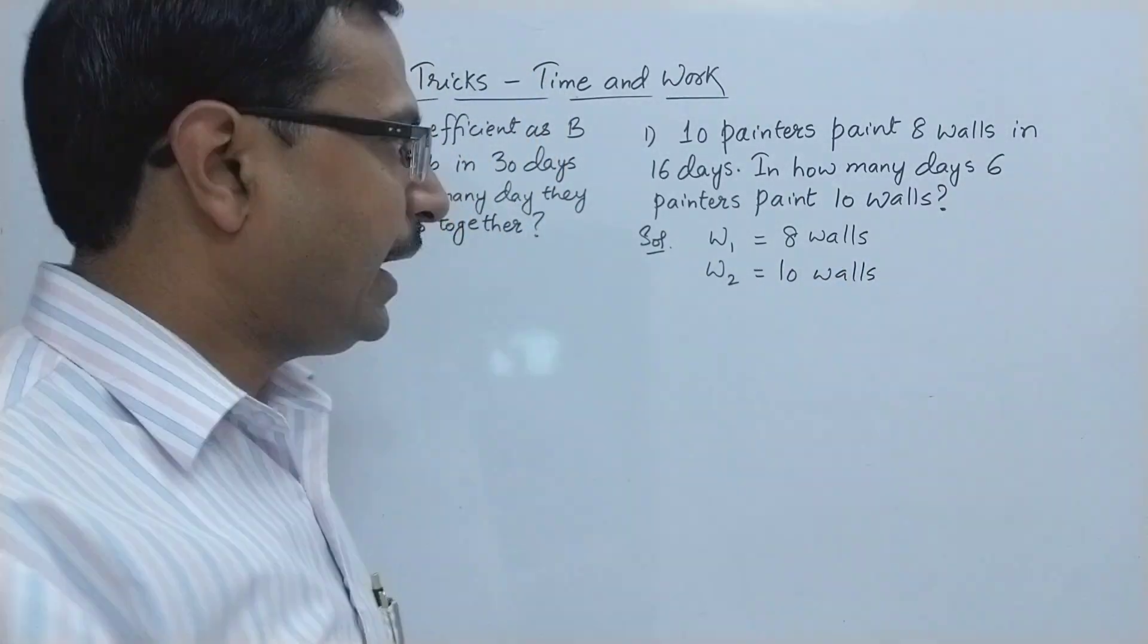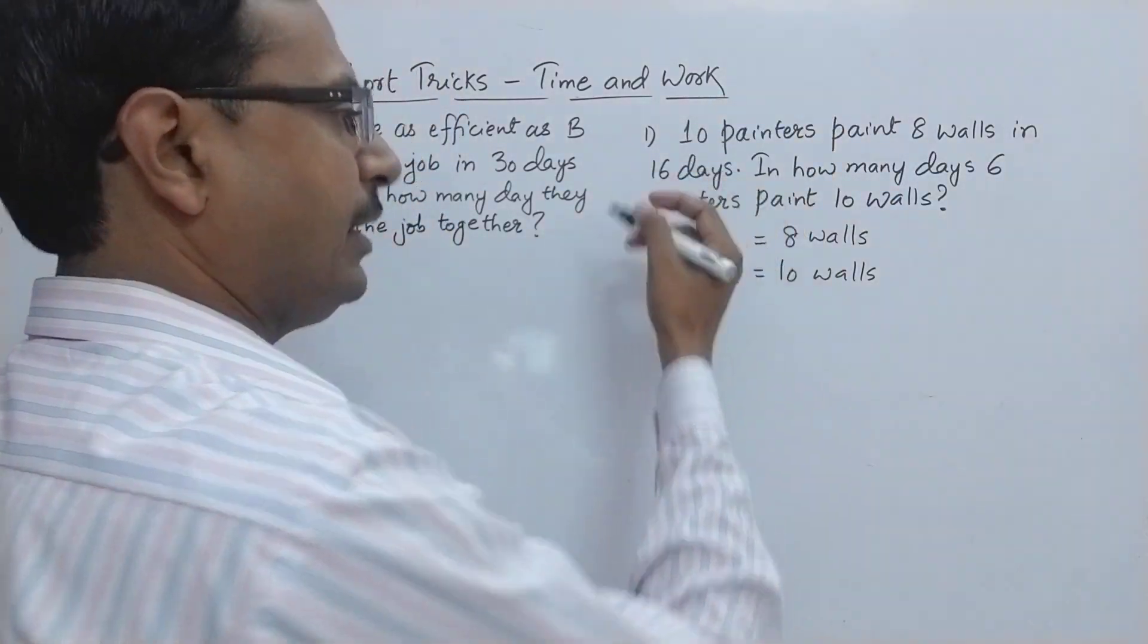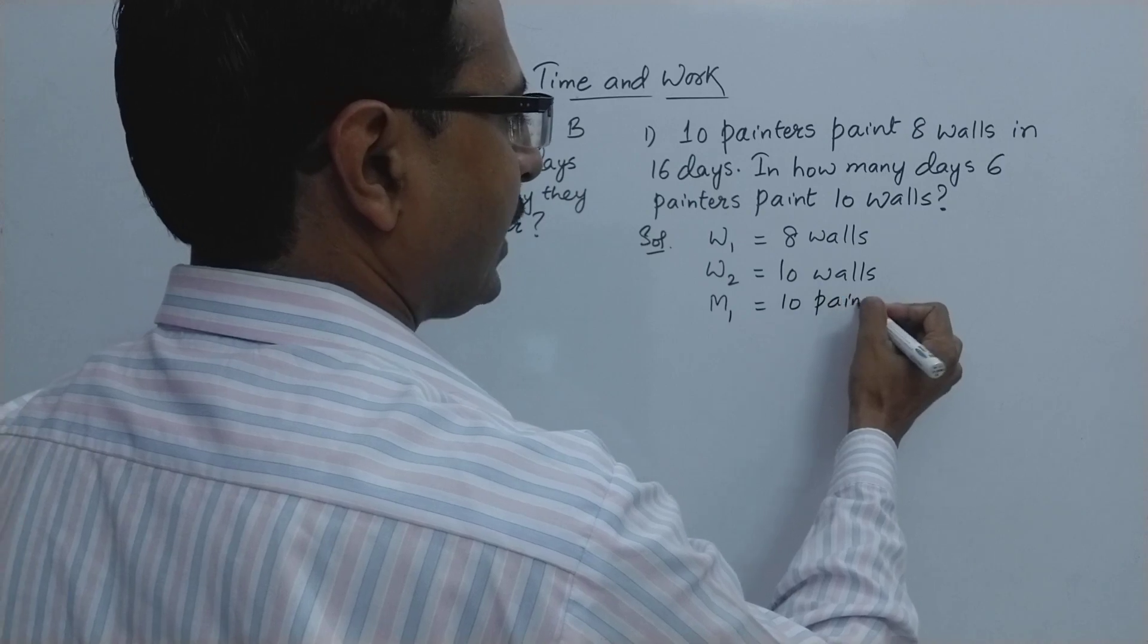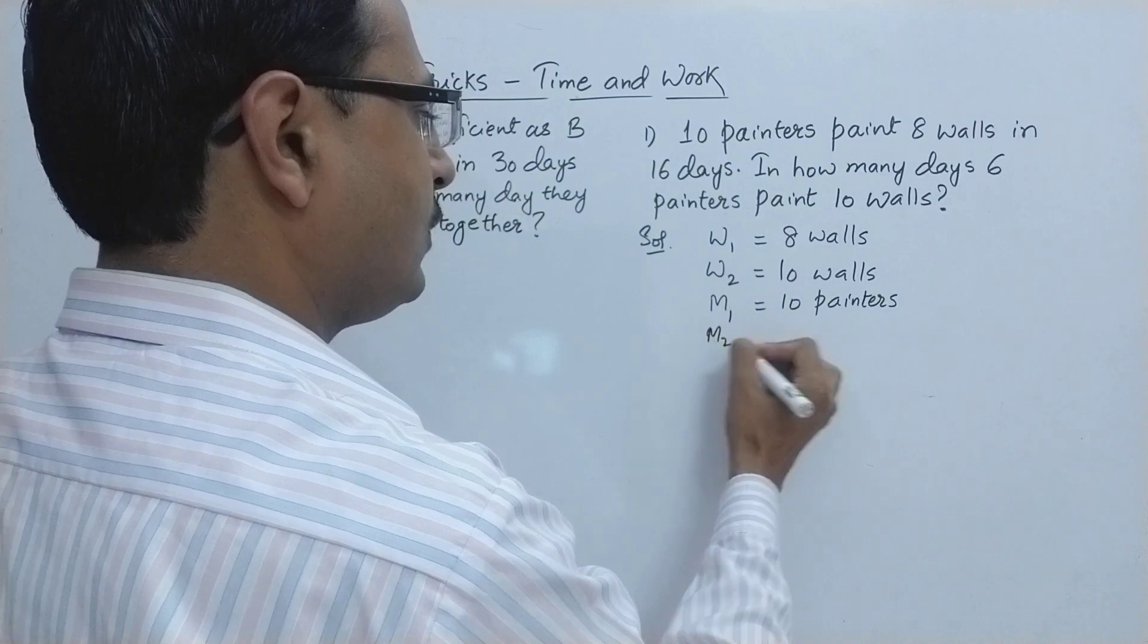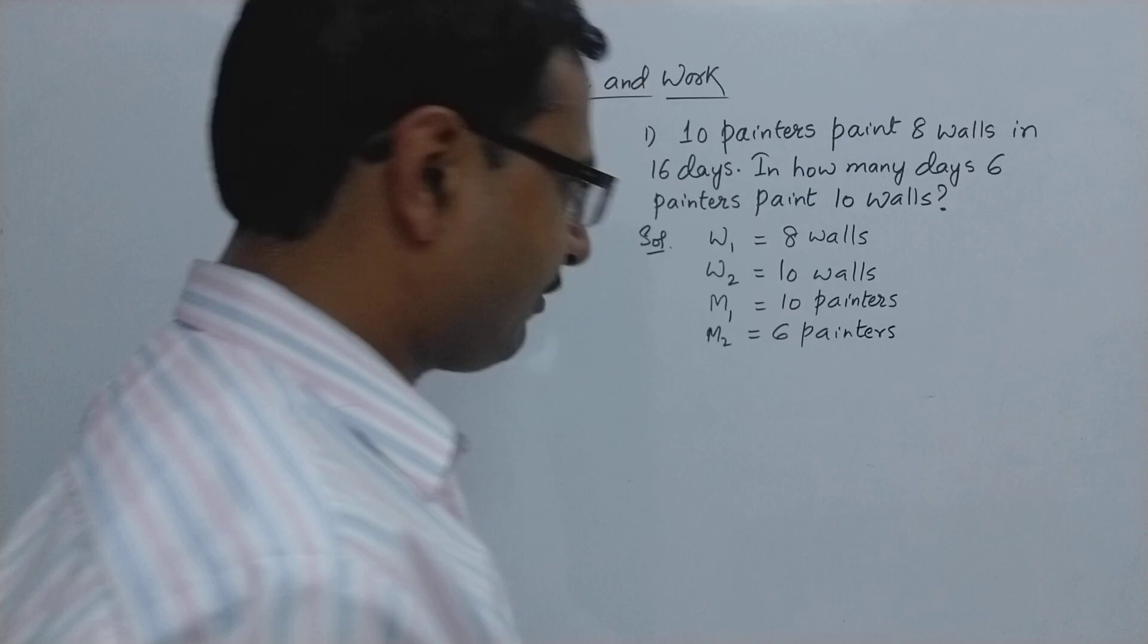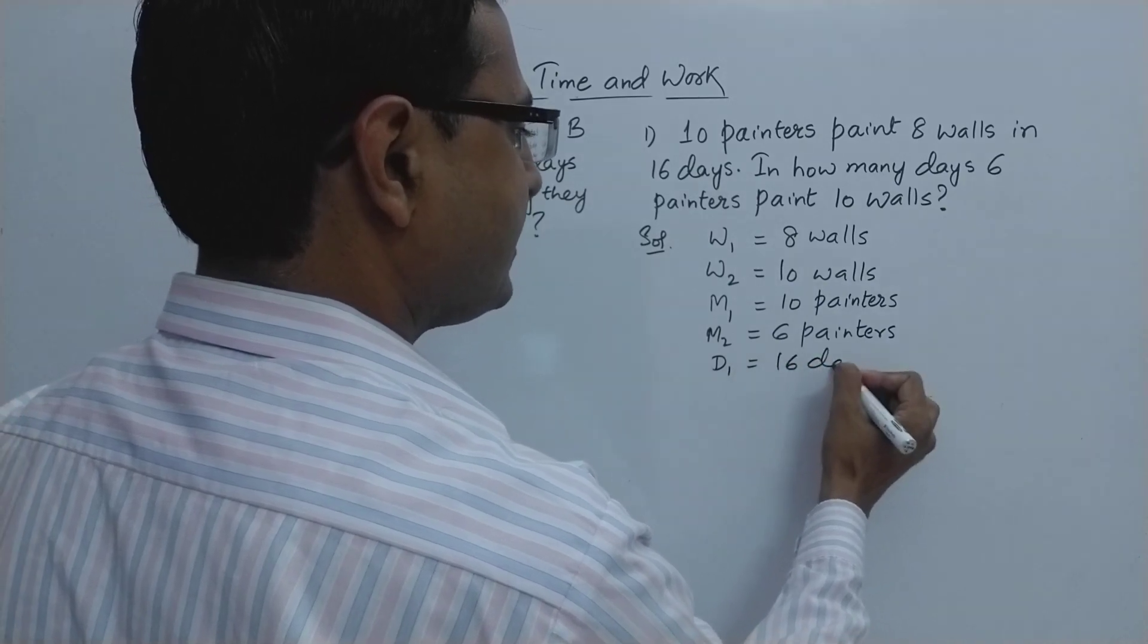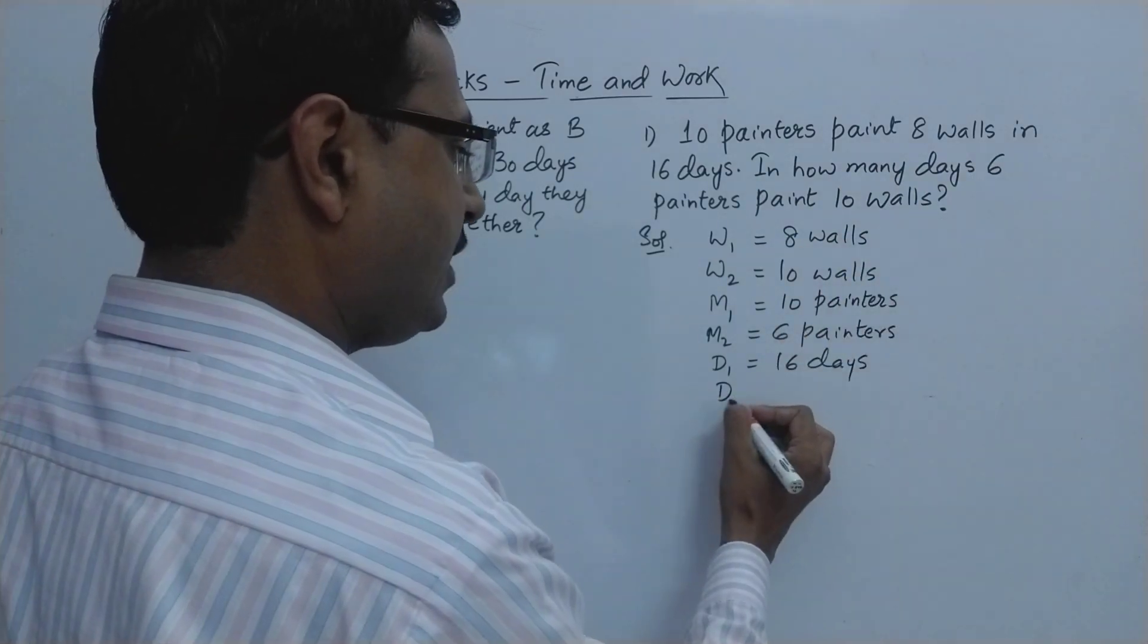And accordingly we have some number of men or resources. So 10 painters, let's call them M1, so we have 10 painters and in the second case 6 painters. So M2 is 6 painters. And what else is left, we are left with number of days. So in the first case we have 16 days, let's call it D1, 16 days, and we have to find the sixth variable, in how many days. So D2 is to be found out.